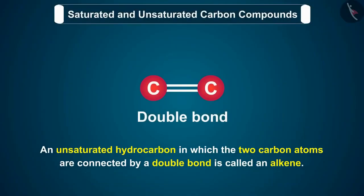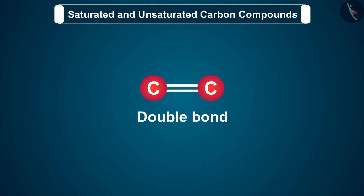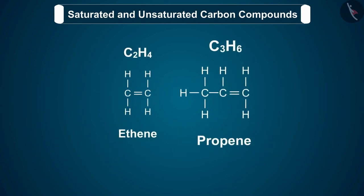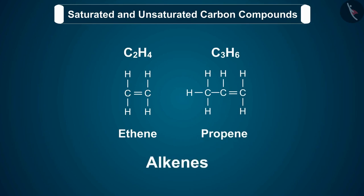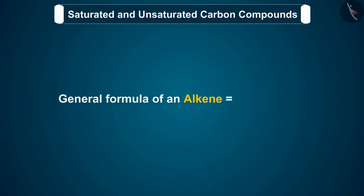An unsaturated hydrocarbon in which two carbon atoms are connected by a double bond is called an alkene. Alkenes contain a double bond between two carbon atoms, formed by the sharing of two pairs of electrons. Ethene (C2H4) and propene (C3H6) are alkenes because they contain a double bond between two carbon atoms. There can be no alkene having only one carbon atom.